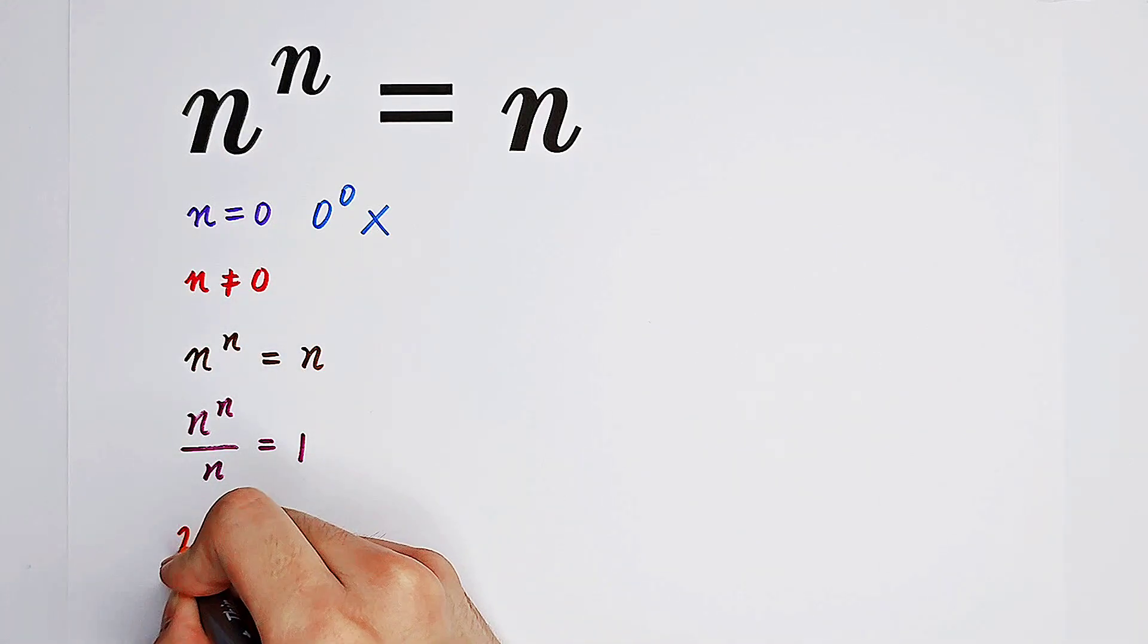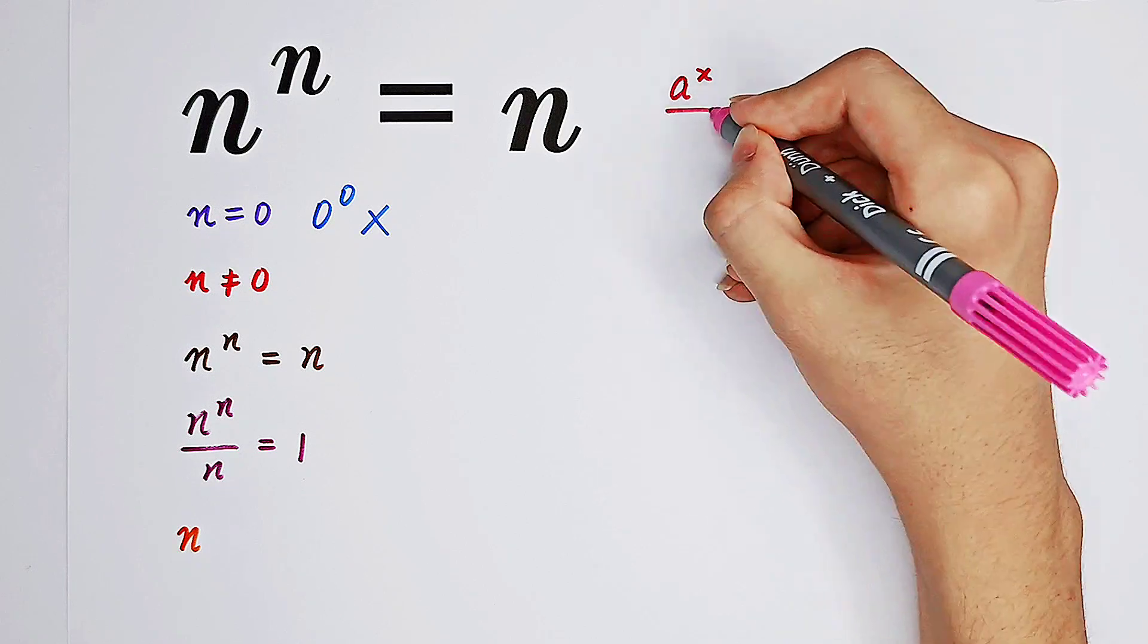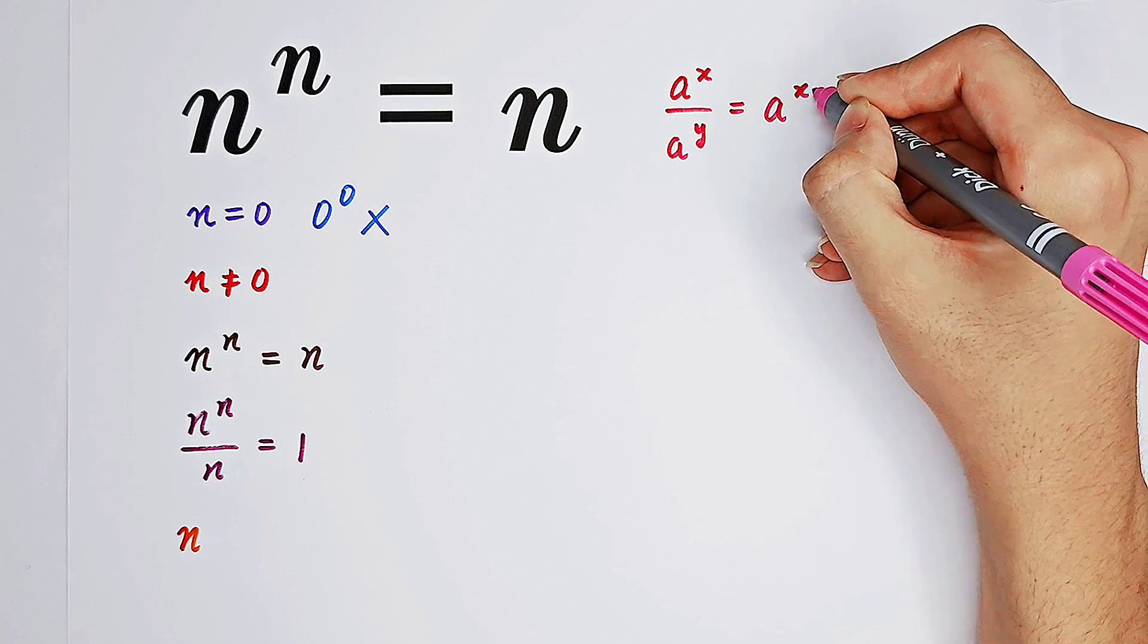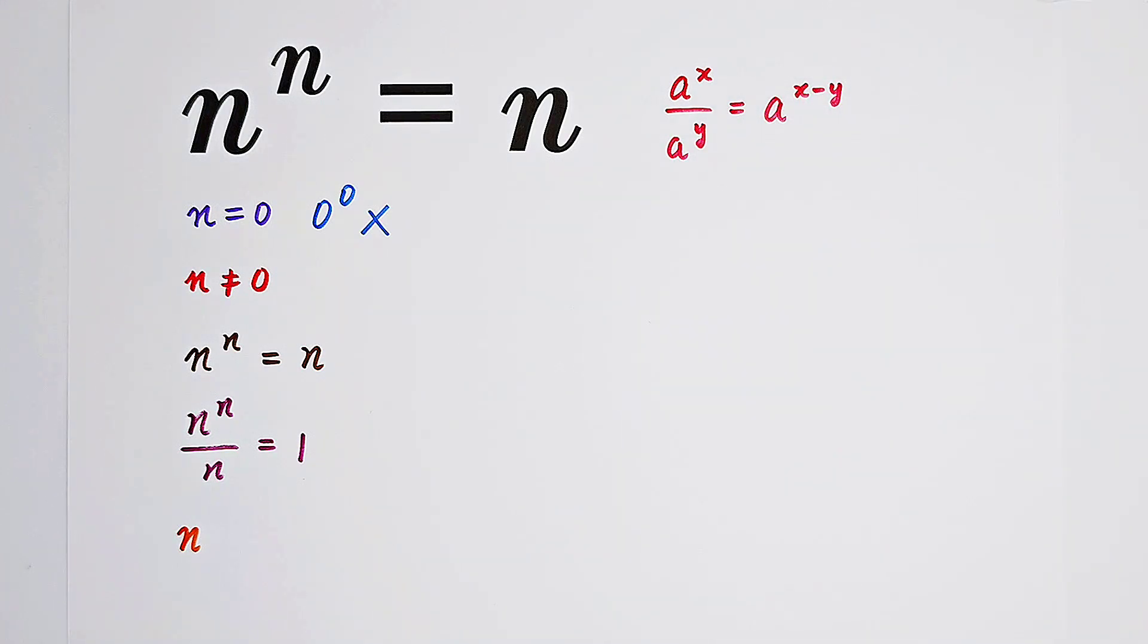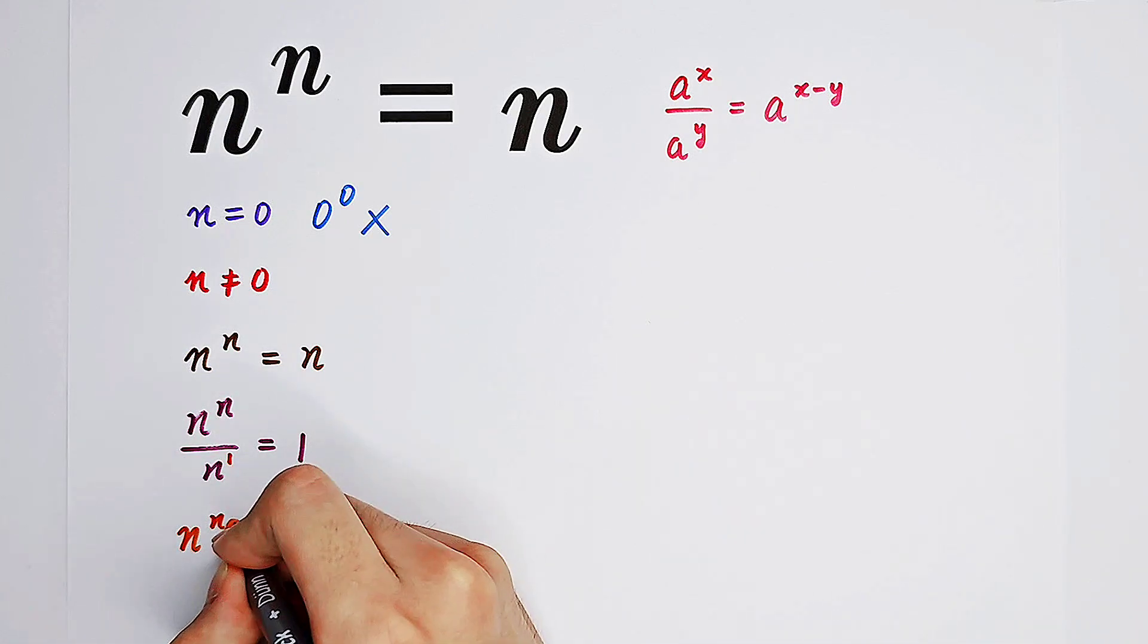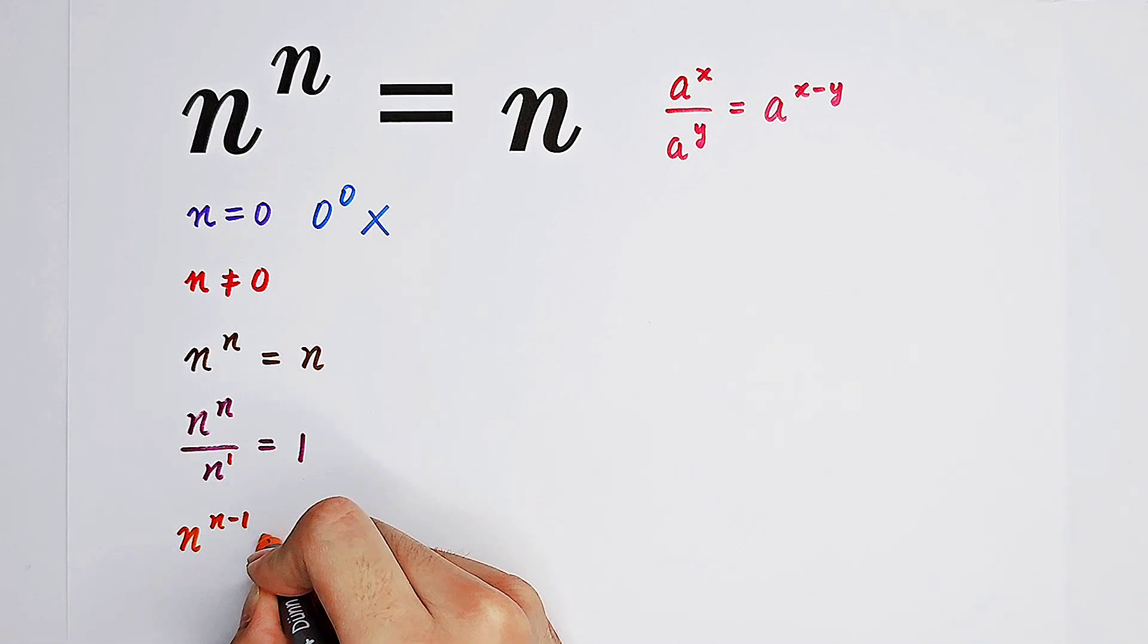Very happy, this is just n to the power of what? Now, by using the formula, a to the power of x over a to the power of y equals a to the power of x minus y. So the new exponent is just the subtraction of the exponent from the numerator and the denominator. Since the denominator is n, which equals n to the power of 1, by using the formula, we have the left hand side is just equal to n to the power of n minus 1. The right hand side is 1.